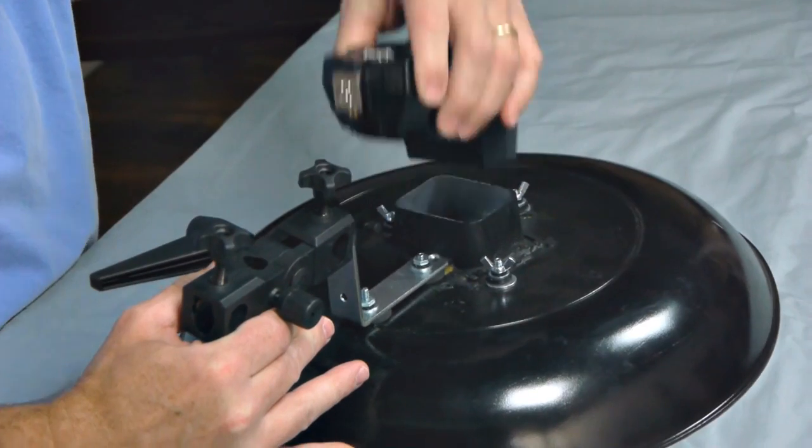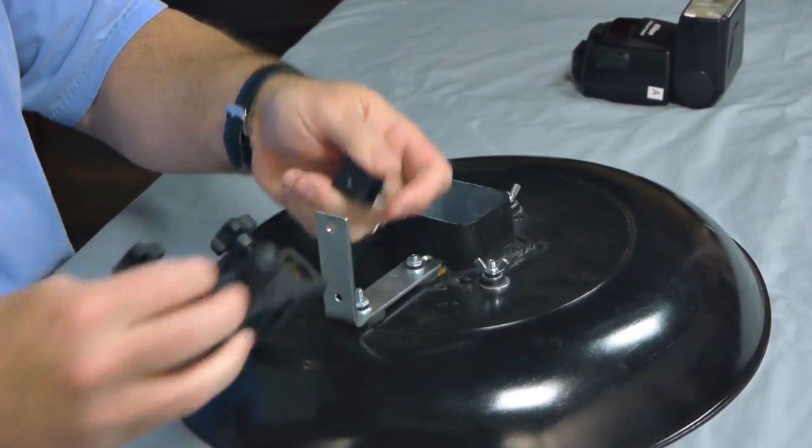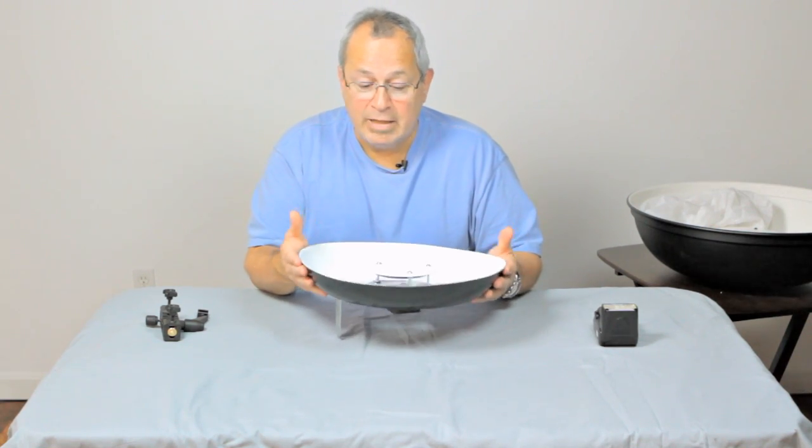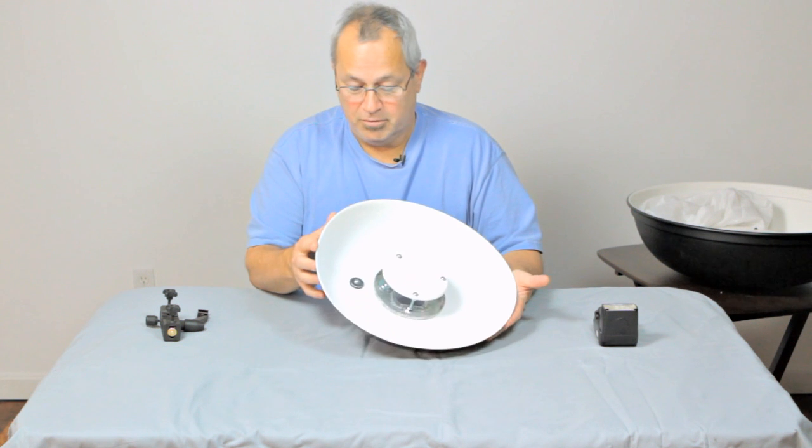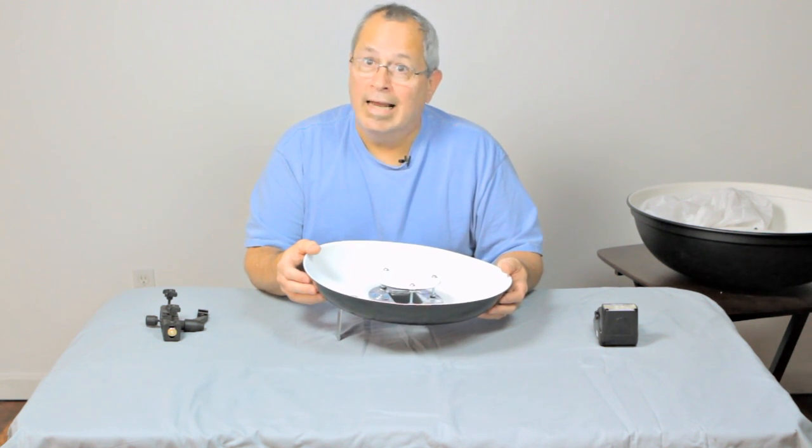And there's the flash and the mount. We're going to flip it over here. What we have is a big old plastic salad dish that you use for summer picnics and stuff. Got it at the Christmas Tree Shop for 99 cents.